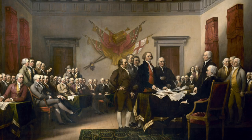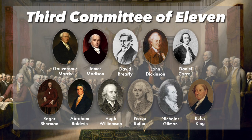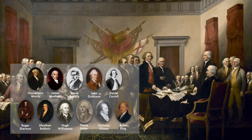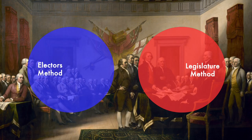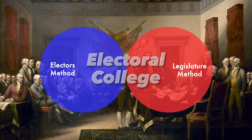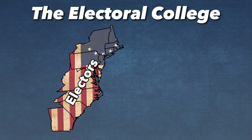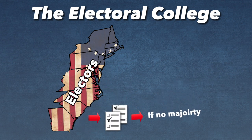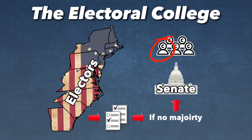The convention realized they were at an impasse, so they tasked the third committee of 11 to find a solution. When the third committee of 11 returned to the full convention, they presented their solution: to blend the electors and legislature methods. Electors would meet in their respective state capitals, vote for two candidates, and if no candidate received a majority, the Senate would choose from one of the top five nominees.